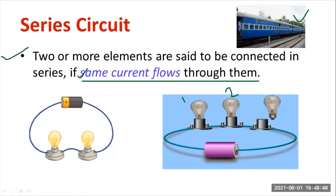When all three bulbs are connected, we can say that these three elements are in series, so that the same current flows. If connected with a battery, the same current will be flowing through each and every element.